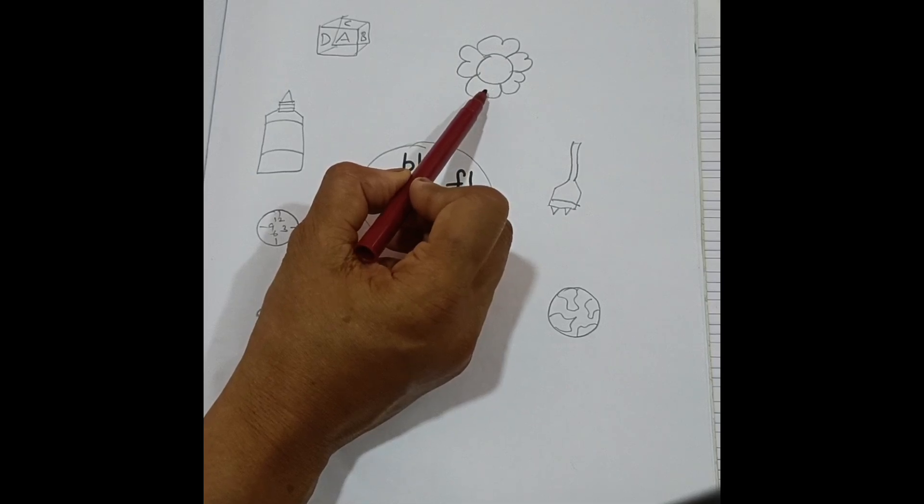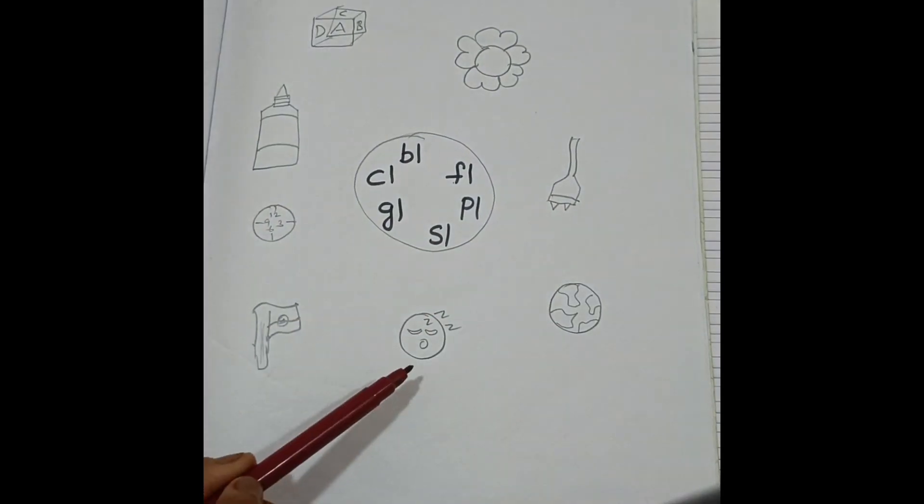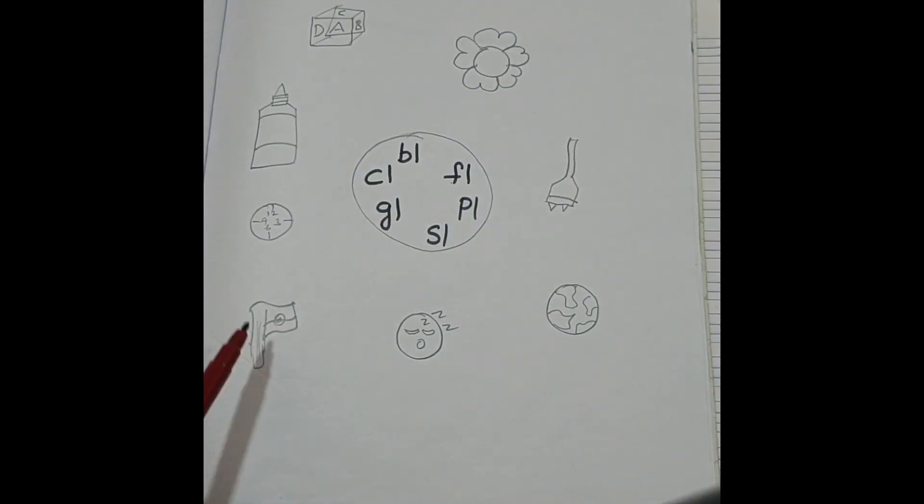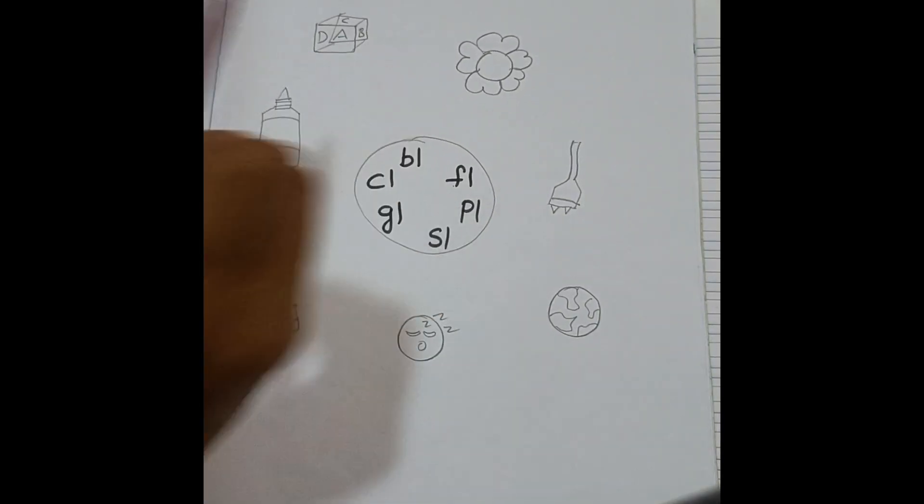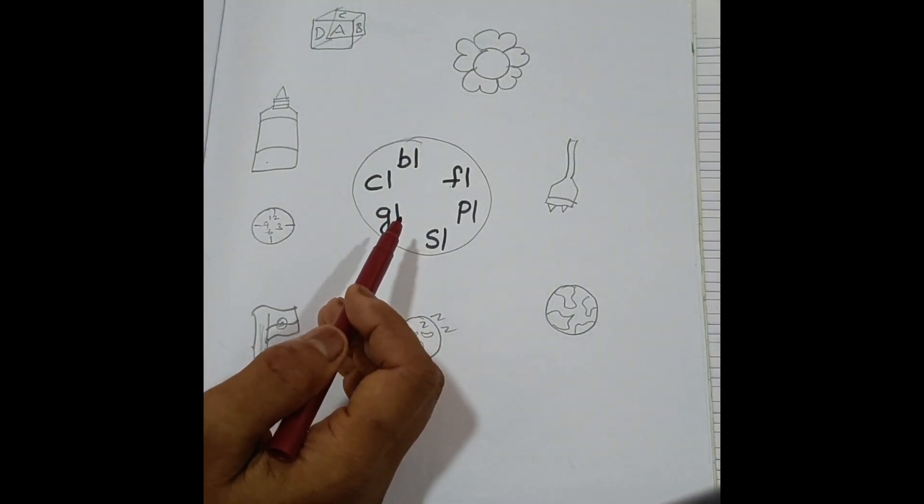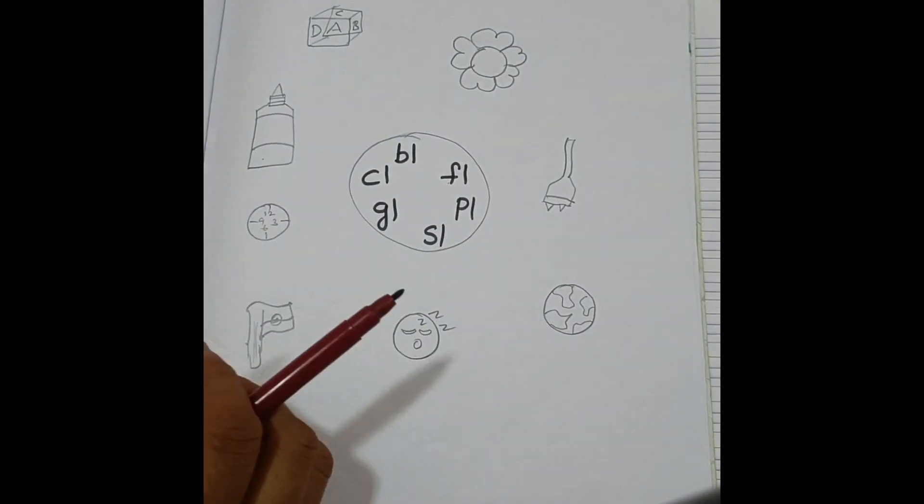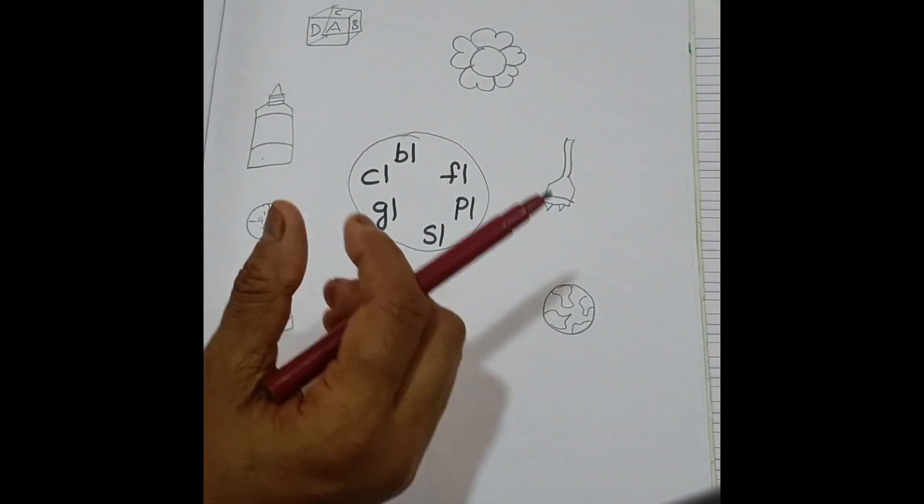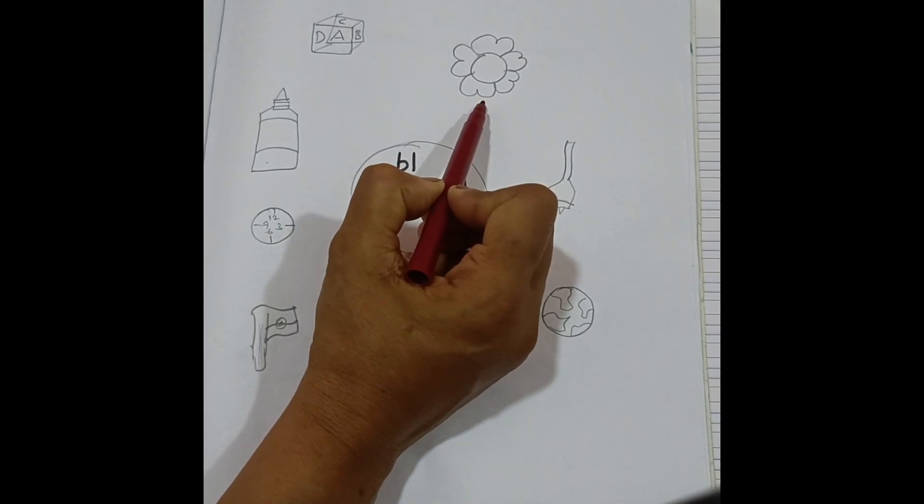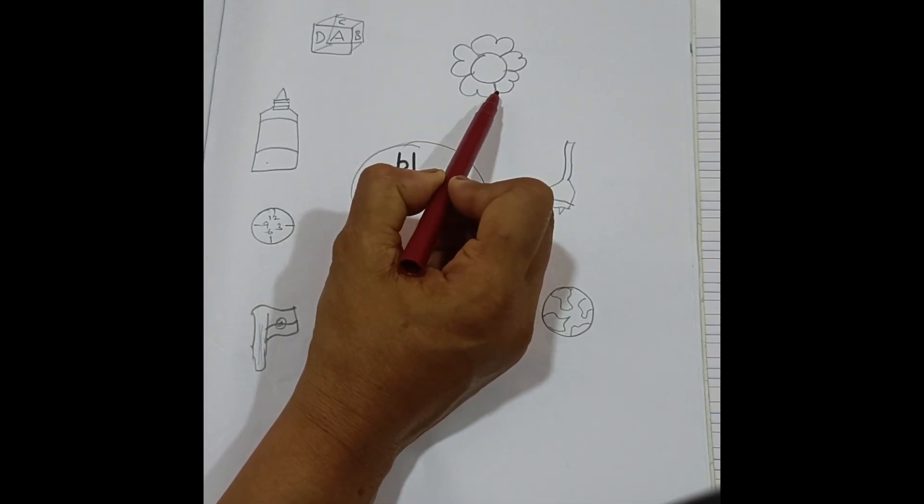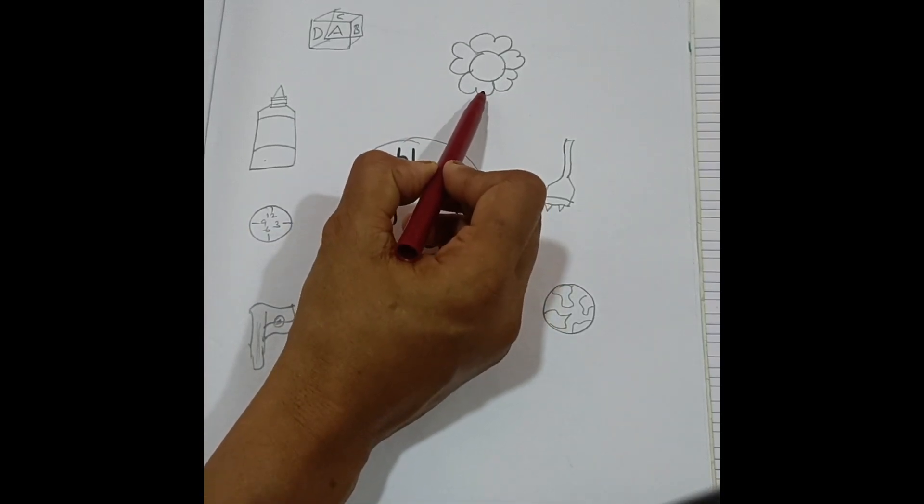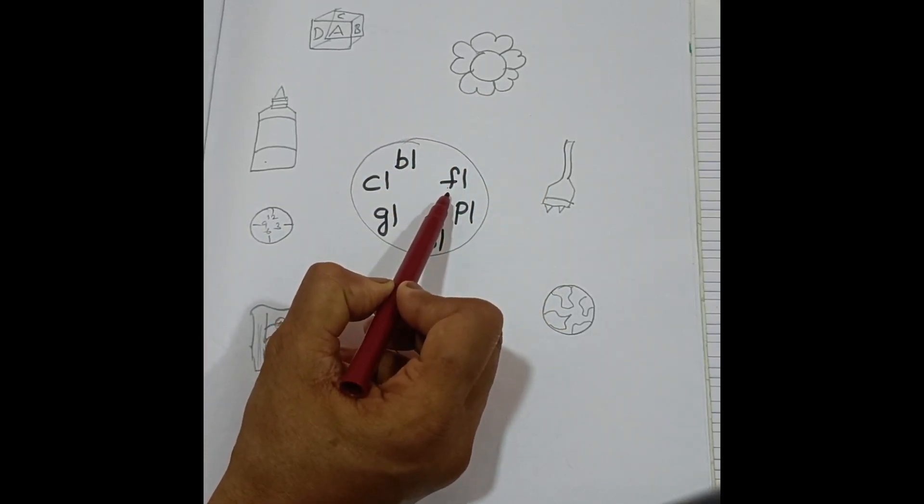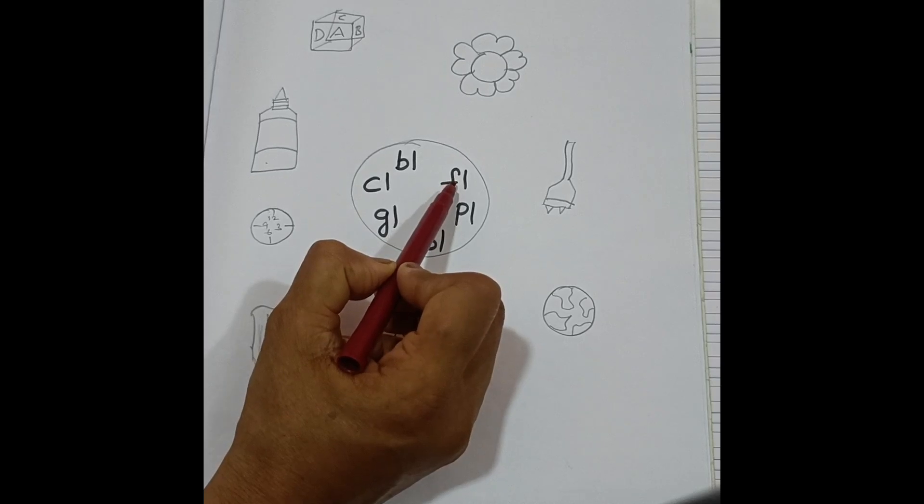So here it's a flower, plug, globe, sleep, flag, clock, glue, block. Okay. So they need to identify the beginning sound of these pictures. What is this? Flower, fl, fl, fl. Fl, fl, where is fl? Here. They need to match it. Select the correct blend. They need to match this. Children really enjoy these type of worksheets.